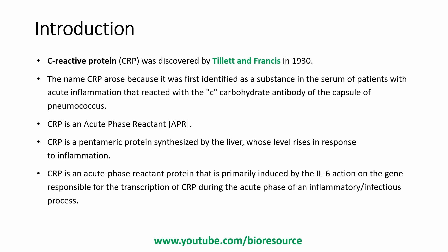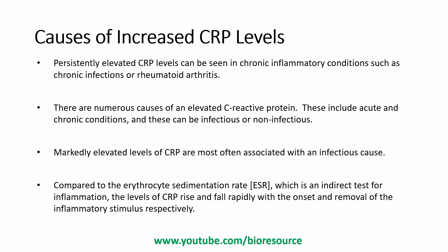CRP is an acute phase reactant. It is a pentameric protein synthesized by the liver, and its level increases in response to inflammation. CRP is primarily induced by Interleukin-6, which acts on the gene responsible for the transcription of CRP during the acute phase of an inflammatory or infectious process. So Interleukin-6 triggers the production of CRP.